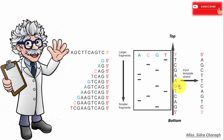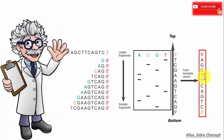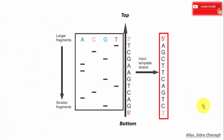The sequence we read from the radiograph is that of the newly synthesized strand. The sequence of the template strand will be complementary to it, reading 5 prime to 3 prime as: A, G, C, T, T, C, A, G, T, C. This is the successfully obtained sequence of the template DNA strand. In this manner we can easily determine the sequence of the template strand — that is all about the Sanger sequencing method.